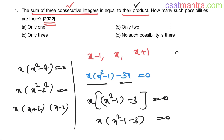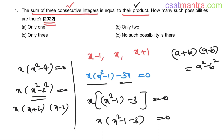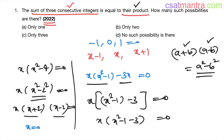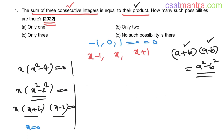Now x²-4 = x²-2² = (x+2)(x-2). So we have x·(x+2)·(x-2) = 0. The first solution is x = 0, giving consecutive integers -1, 0, 1. Their sum is 0 and their product is also 0 — this is one valid possibility.